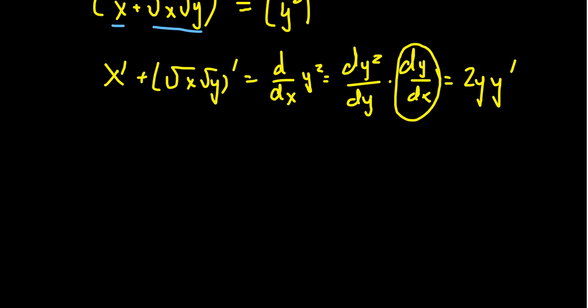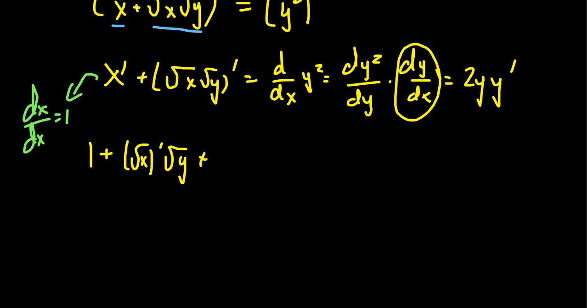Continuing on, when we look at the left-hand side again, the x prime is just dx over dx, which equals 1. So we get 1 plus the derivative of the square root of x times the square root of y. Because we have a product of two functions, we use the product rule, giving the square root of x prime times the square root of y, plus the square root of x times the square root of y prime. We still have 2y·y' on the right-hand side.